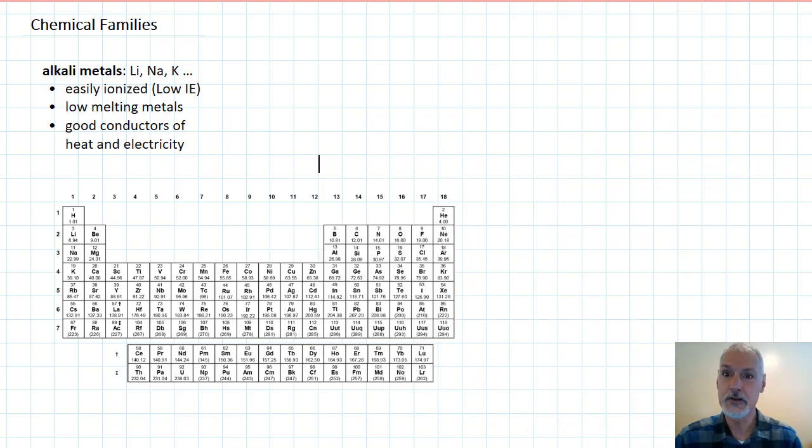In this final program on our periodic table, I want to take a look at two chemical families. The first family are the alkali metals. Let's locate where they are on the periodic table.